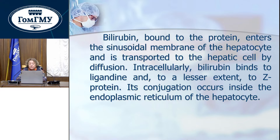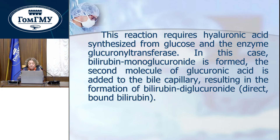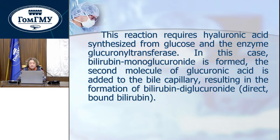Bilirubin bound to protein enters the sinusoidal membrane of the hepatocyte and is transported to the hepatic cells by diffusion. Intracellularly, bilirubin binds to ligandin and to a lesser extent to Z-protein. Its conjugation occurs inside the endoplasmic reticulum of the hepatocyte. This reaction requires glucuronic acid synthesized from glucose and the enzyme glucuronosyltransferase. Bilirubin monoglucuronide is formed first, then a second molecule of glucuronic acid is added in the bile canaliculus, resulting in the formation of bilirubin diglucuronide — direct or conjugated bilirubin.